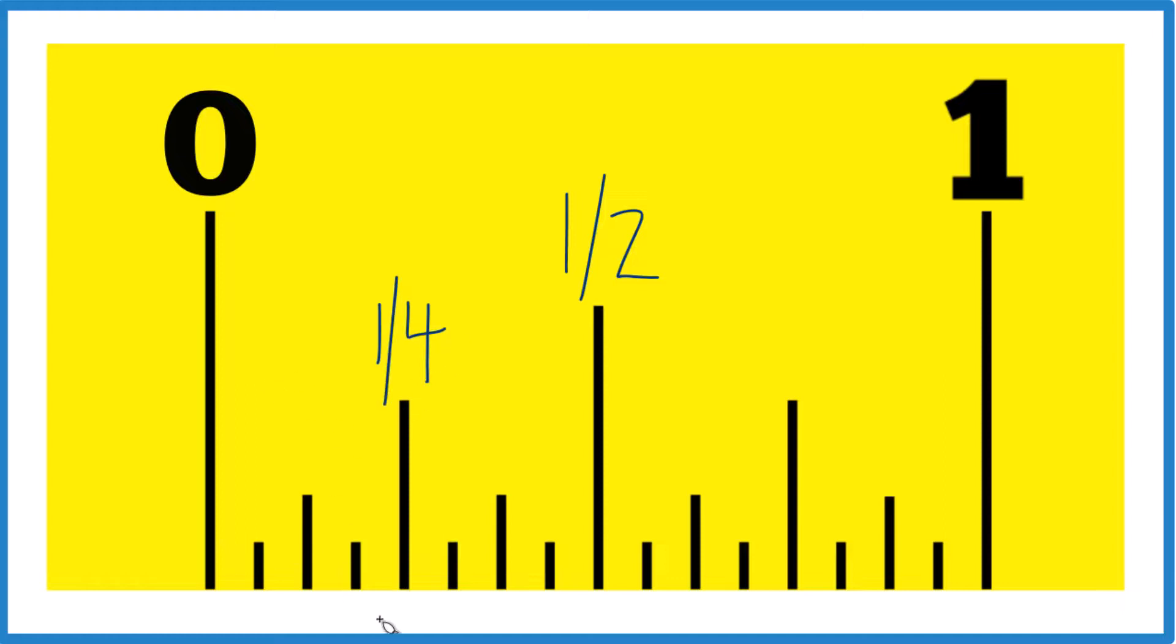And then we'll take the one fourth right here, cut that in half. That gives us one eighth. So there's our one eighth. That's how you do it. This is Dr. B finding one eighth on a ruler or a tape measure. Thanks for watching.